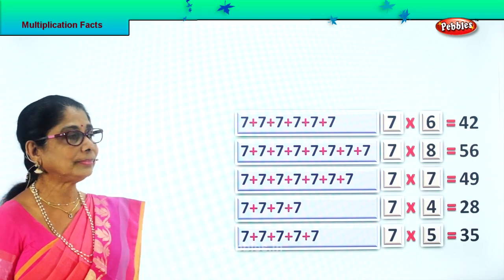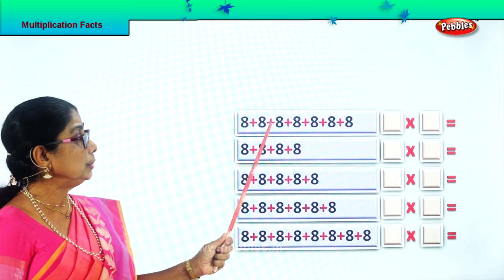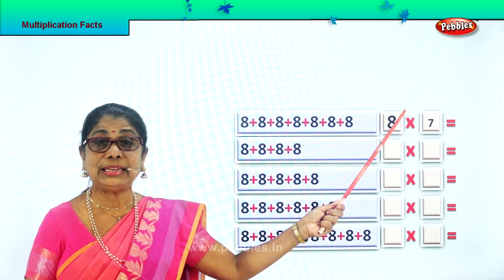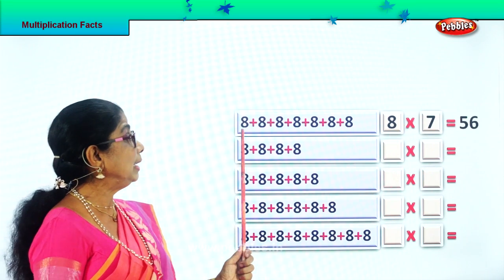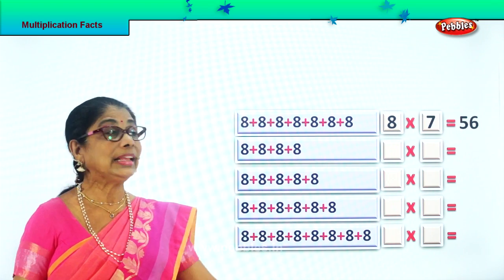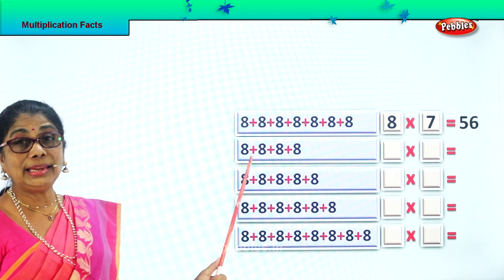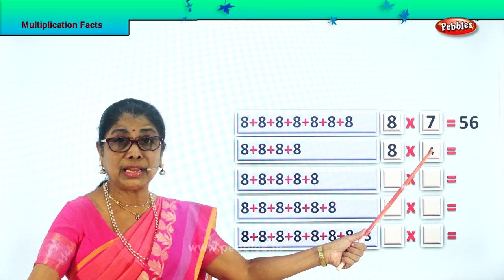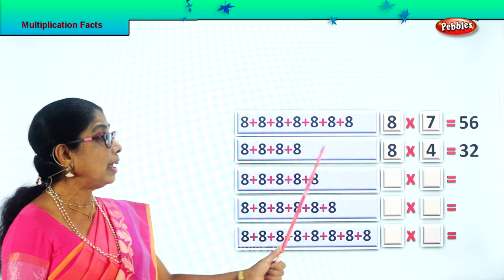Let's see — look at our multiplication. Here we are going to look at 8. 1, 2, 3, 4, 5, 6, 7. 8 how many times? 7 times. 8 plus 8 plus 8 plus 8 plus 8 plus 8 seven times. Here 8 how many times? 8 plus 8 plus 8 plus 8 — 4 times. 8 fours are 32.